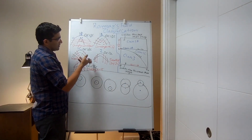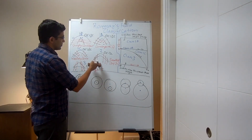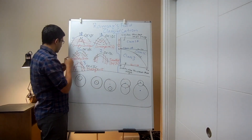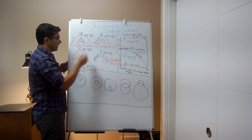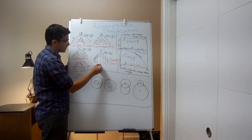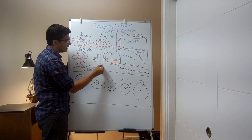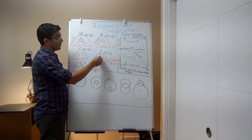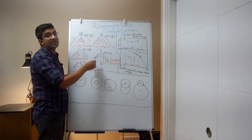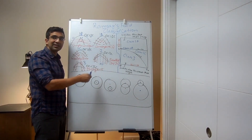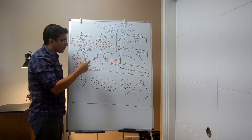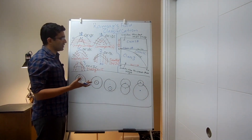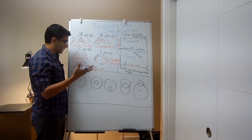Coming to class 2, all the dip isogons are parallel to the axial plane. If you orient the axial plane vertically and make the fold upright, all dip isogons point vertically downward. Because they are all pointing in the same direction, they are neither converging nor diverging.